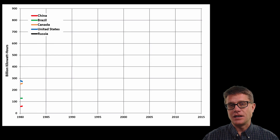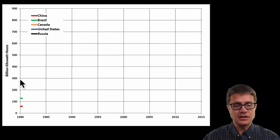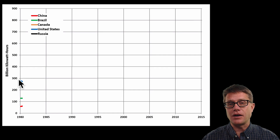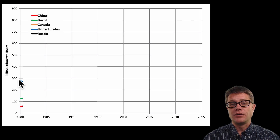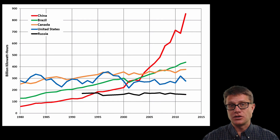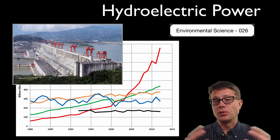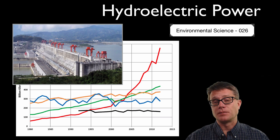If we look back in 1980 at the world leader in hydroelectric power, it was the United States, followed quickly by Canada, with nearly 300 billion kilowatt hours being produced, mostly by dams. If we look at what has happened over the last 35 years, we see a new country emerge: China. And the reason why is the Three Gorges Dam — it is the largest dam on our planet, and they hope to produce up to 10% of their electricity needs from this one dam alone.